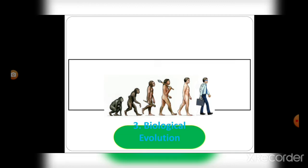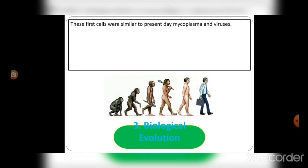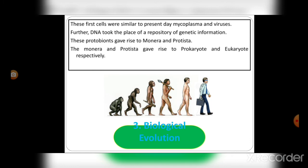Next is biological evolution. The first cells were similar to present day mycoplasma and viruses. DNA took place as repository of genetic information. These protobionts gave rise to Monera and Protista. Monera and Protista gave rise to prokaryotes and eukaryotes respectively. Monera developed into bacteria and cyanobacteria, whereas Protista gave rise to eukaryotes that developed into protozoa and metaphyta.